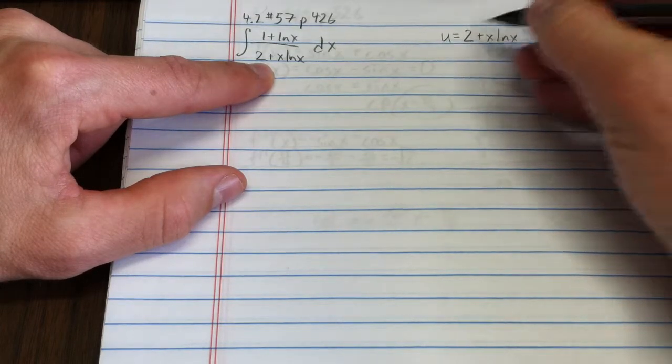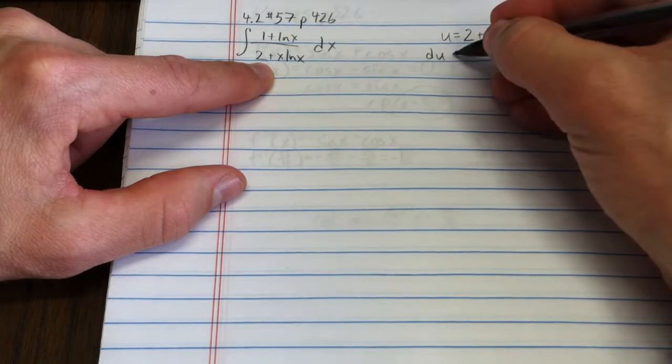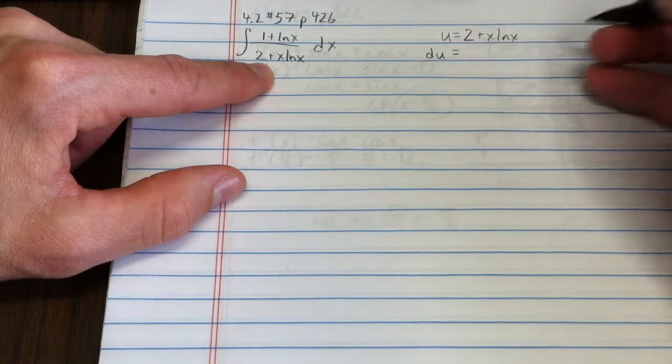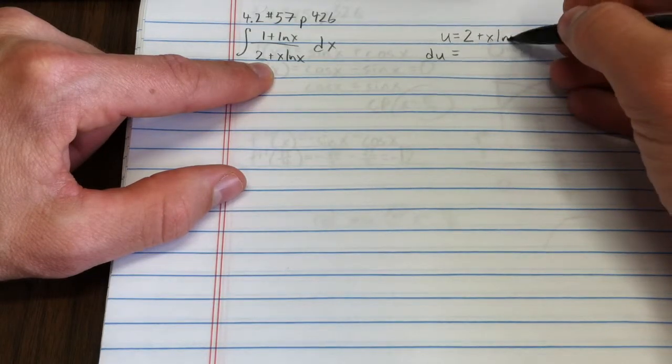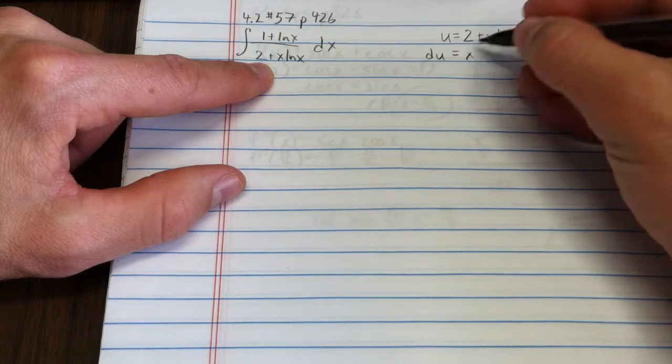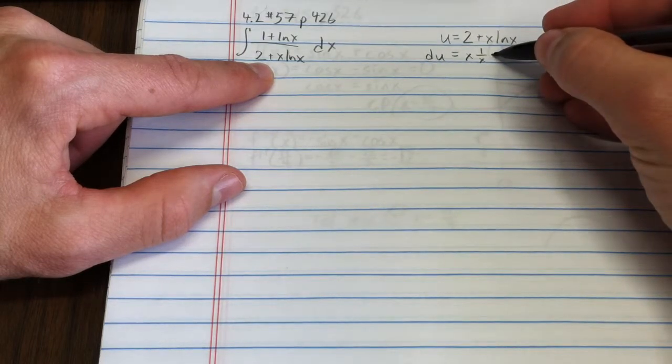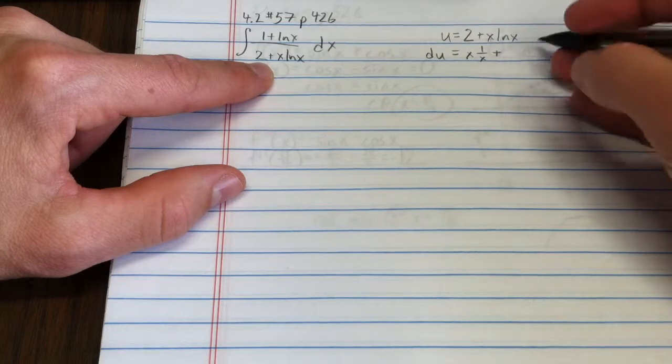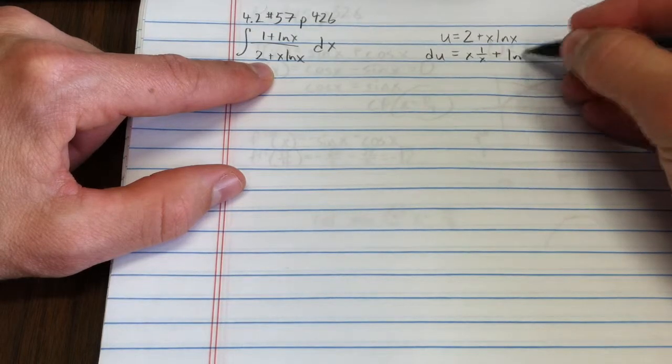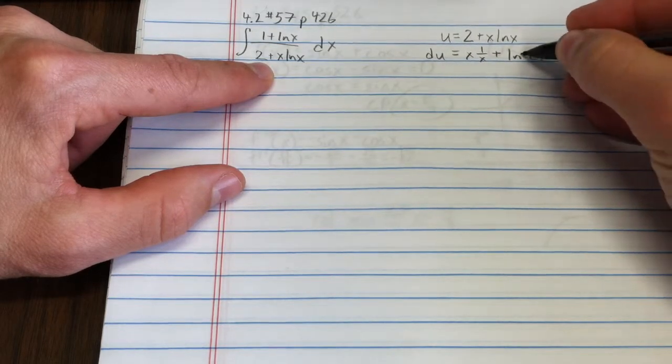My du, derivative of 2 is nothing. Derivative of x natural log of x is x times 1 over x, using the product rule, plus the derivative of that, which is 1 natural log of x dx.